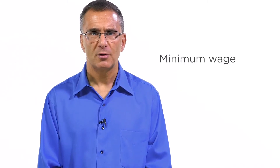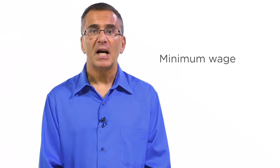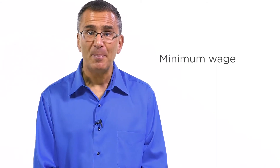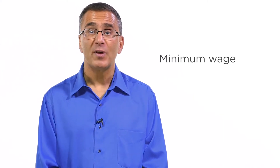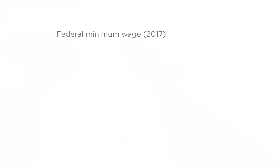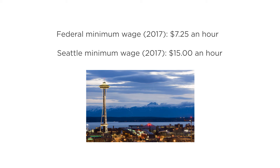This question gets at a policy that's one of the most debated in all of economics: the minimum wage. The minimum wage is a price floor set by the government — a law that says workers can't be paid below some certain level. The federal minimum wage has been around for more than 80 years in the U.S. and is currently set at $7.25 an hour, though many states and cities have their own minimum wages that are higher. Indeed, the city of Seattle recently raised its minimum wage to $15 an hour, more than twice the national level.